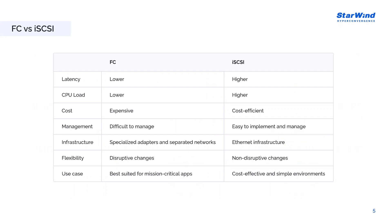Fiber Channel is a block-level storage protocol that utilizes Fiber Channel technology to connect storage devices to servers. It is known for its high-speed data transfer capabilities, making it suitable for mission-critical tier-zero applications and databases such as online transactional processing, banking applications, and data analysis. It offers low latency, resulting in faster IOPS and throughput compared to iSCSI, and excels at providing optimal performance for mission-critical applications that require minimal latency and low overhead. The isolated nature of Fiber Channel, separate from non-storage traffic, guarantees dedicated and efficient performance.